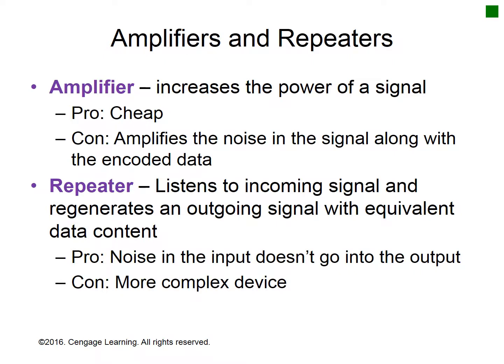Amplifiers and repeaters are two approaches to signal restoration. An amplifier increases the power of a signal — it is cheap, but the drawback is that it amplifies noise along with the encoded data. A repeater listens to incoming signals and regenerates an outgoing signal with equivalent data content. The advantage is that noise in the input does not carry into the output, though the con is that it is a more complex device. As all electrical devices have become cheaper, repeaters have completely replaced amplifiers in data communications and computer networks.